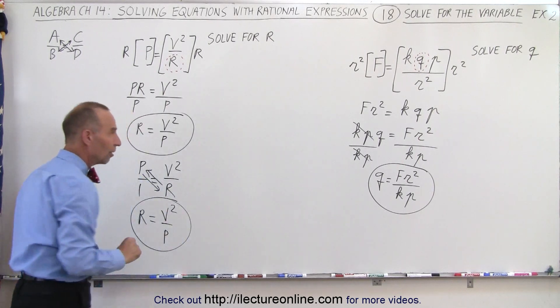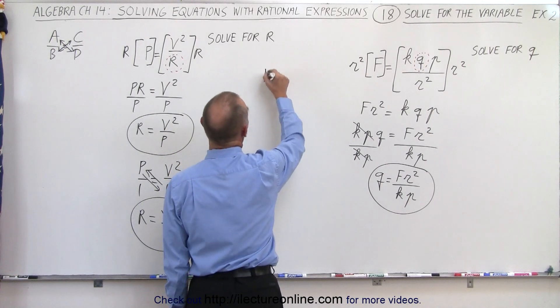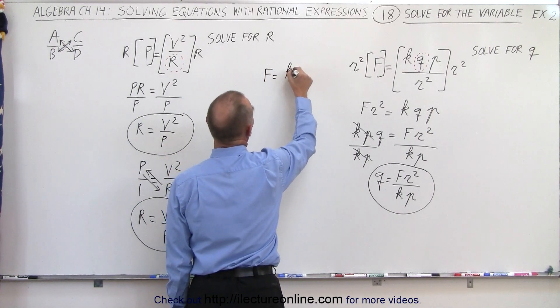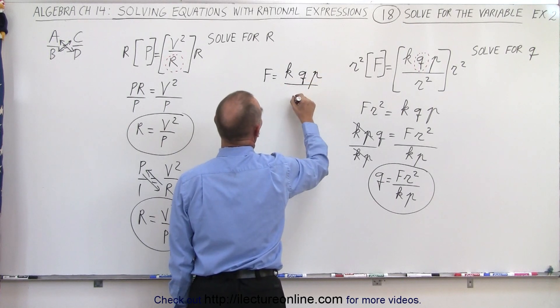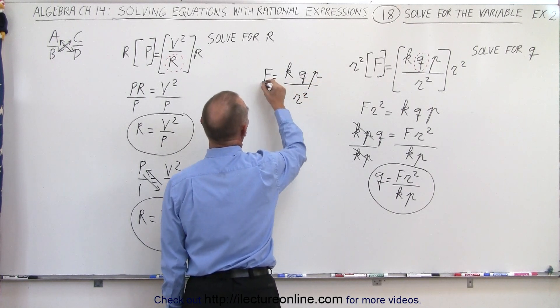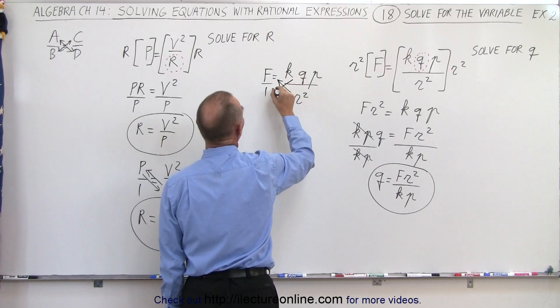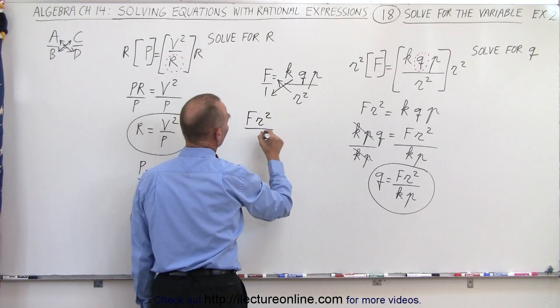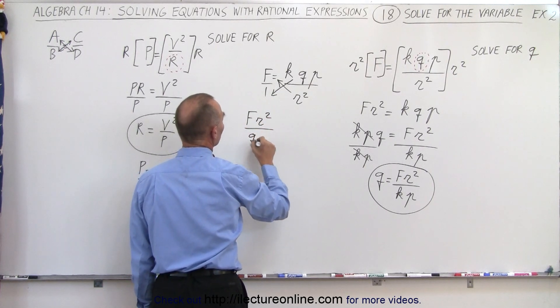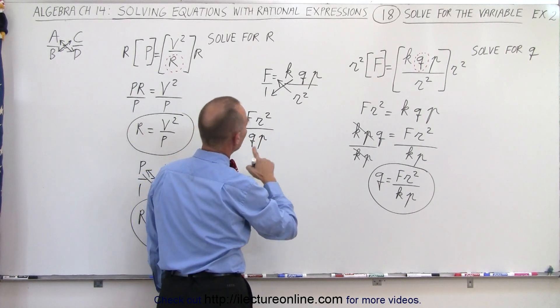Same over here, what we could have done is we could have said f is equal to k, q, p over r squared. Again, think of f over 1, move the r this way, move the k and the p this way. So we end up with f r squared divided by... And we're left, oh, wait a minute. Nope, I don't want to move the q across.